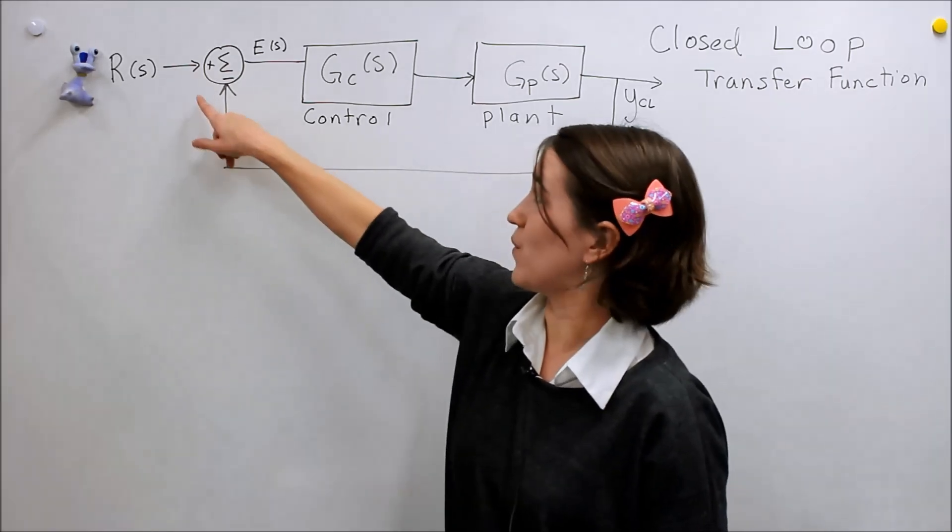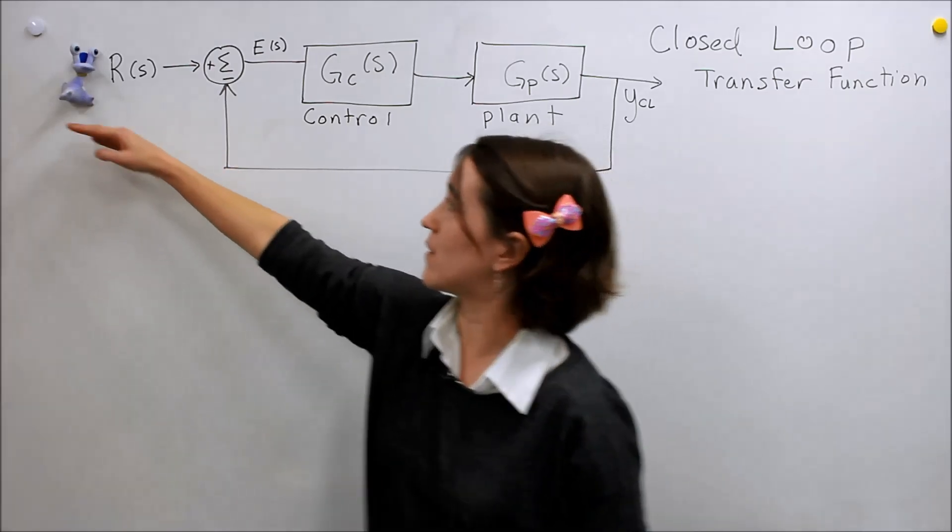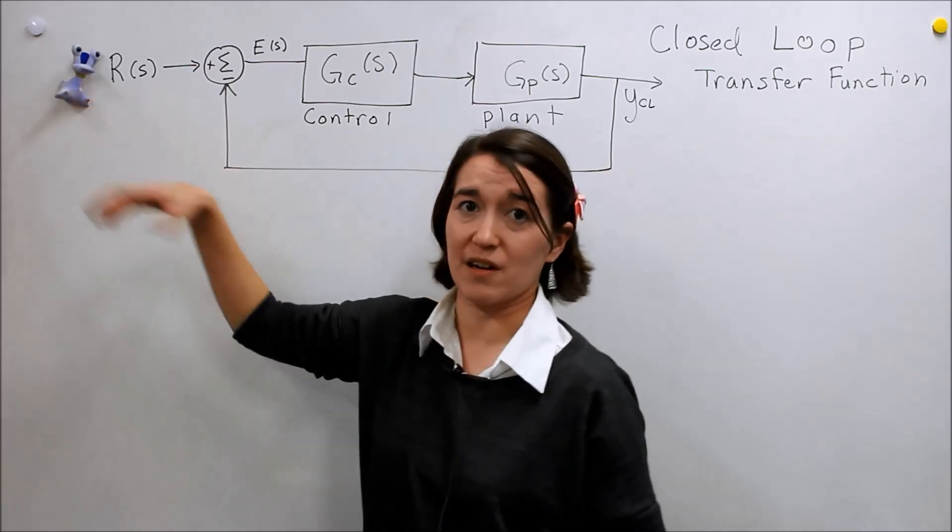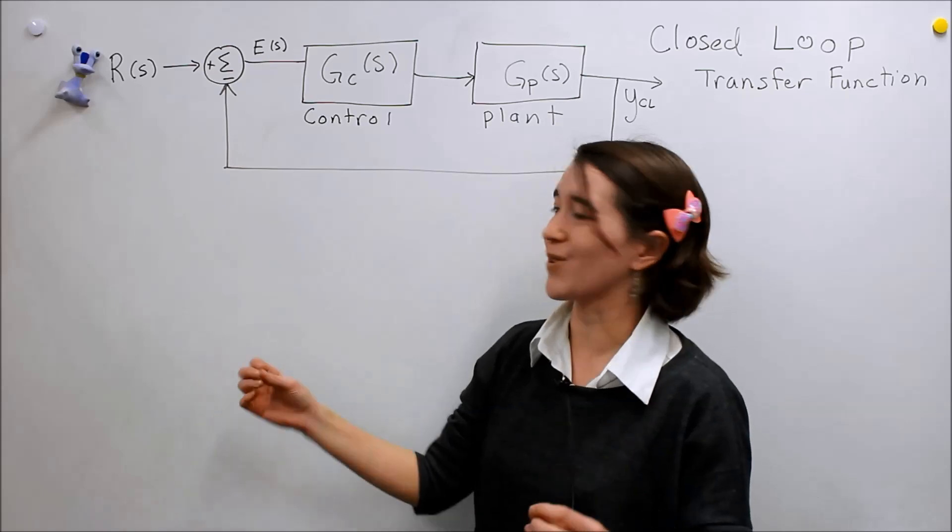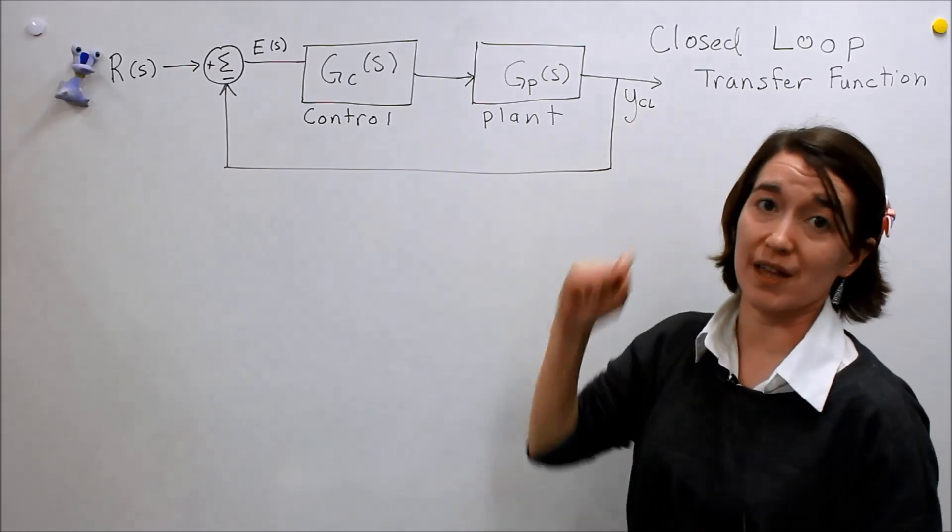We take that output and we feed it back to the earlier part of the chain, and we take the difference here and we get the error. So the error between the reference, the setpoint - the setpoint is set by Valerie, this is our human input or our reference - we're choosing that and then we want our system output to look like that.